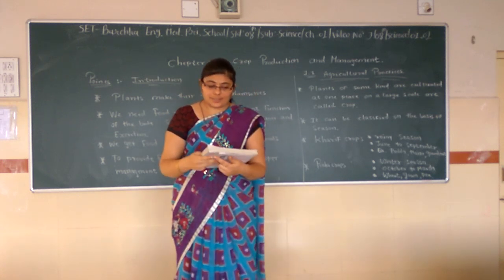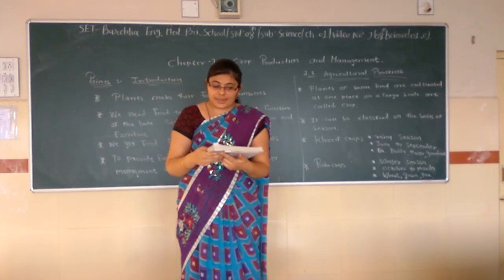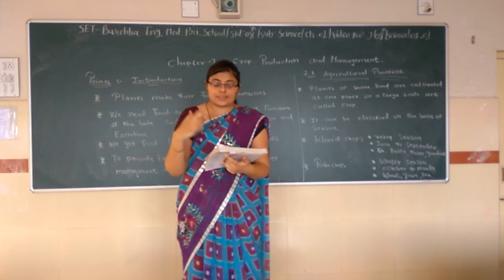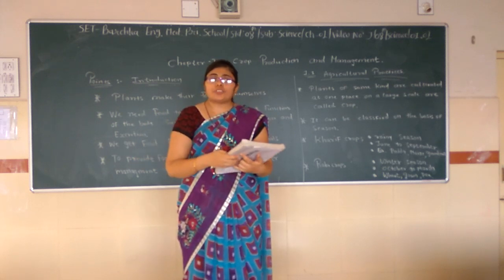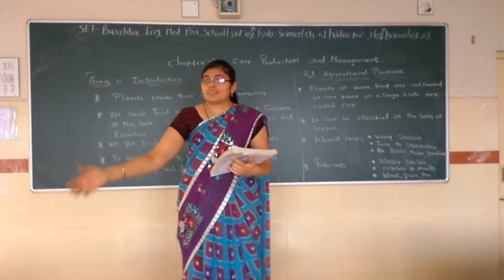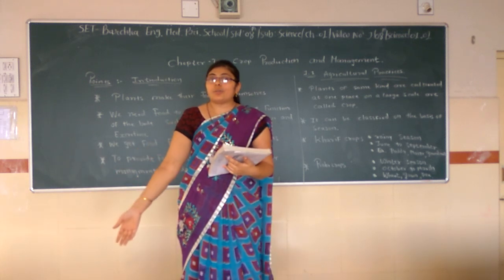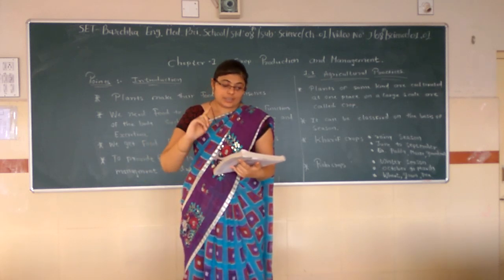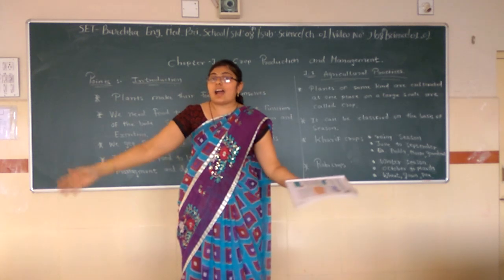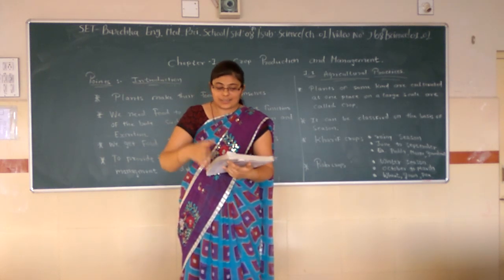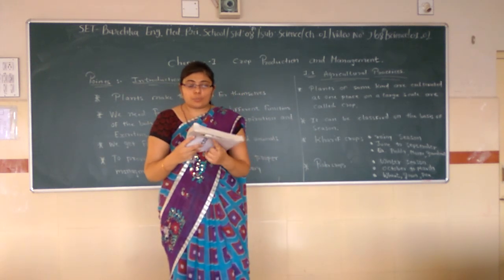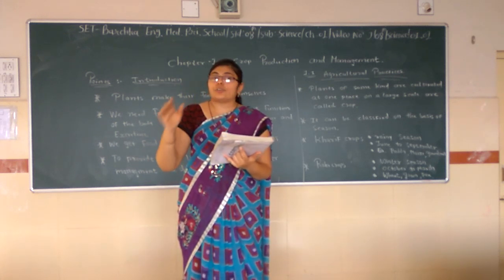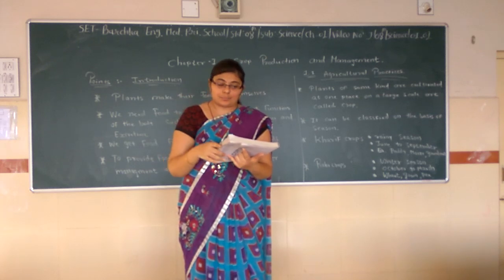When plants of the same kind are cultivated at one place on a large scale, it is called a crop. For example, if you are cultivating mango trees alongside rice, that is not called a crop. But if you cultivate the same plant on a large scale in a large field, it is called a crop. A crop of wheat means all the plants growing in the field are wheat, and only wheat.